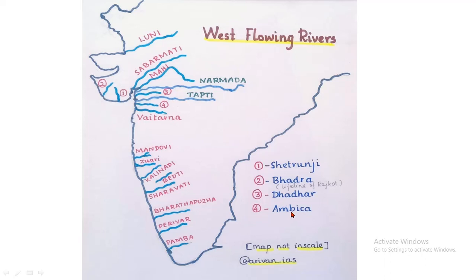Next is Vaitarana — Vaitarana is in Maharashtra. Next, Mandavi and Zuhari, which are in Goa. Kalinadi, Vedithi, and Shravathi are in Karnataka. Bhartpula, Periya, and Pamba are in Kerala.